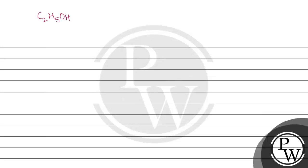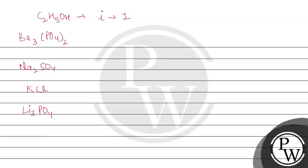According to the question, C2H5OH is given, which is non-dissociative, so its van't Hoff factor i equals one. For all the others — Ba3(PO4)2, Na2SO4, KCl, and Li3PO4 — the van't Hoff factor will equal the number of particles formed after dissociation.